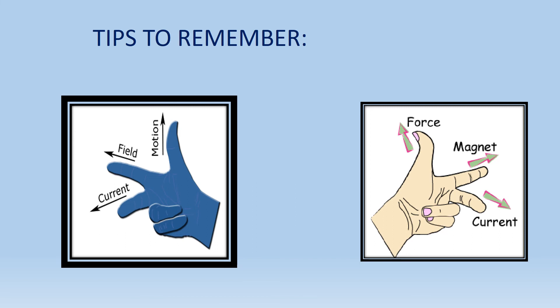The forefinger and middle finger are the same in both rules: forefinger shows magnetic field and middle finger shows current. The only difference is the thumb finger. In the right hand rule, the thumb shows motion, and in the left hand rule, the thumb shows force.